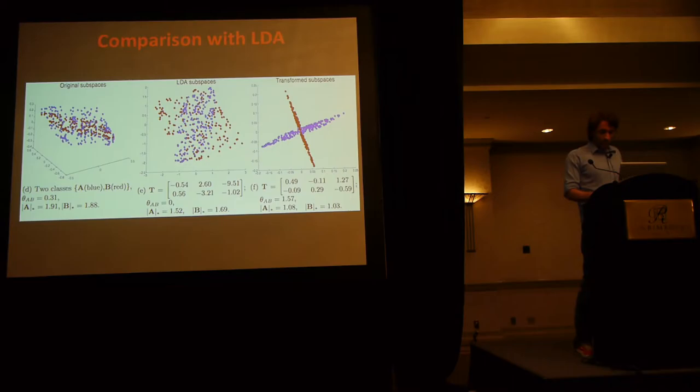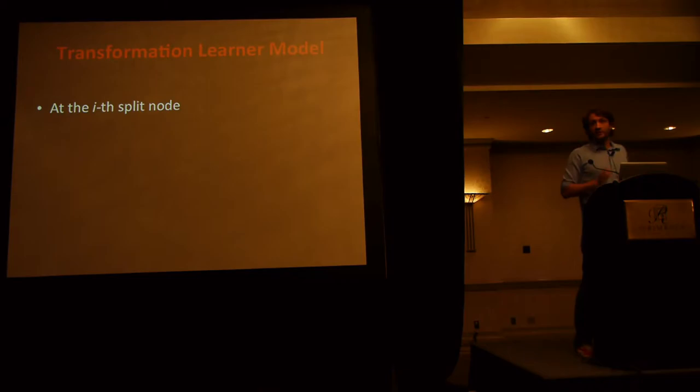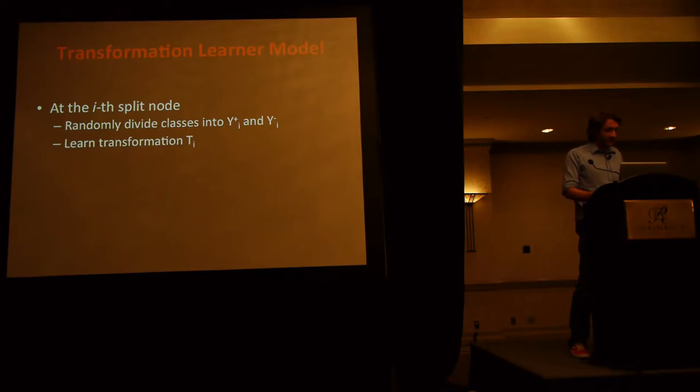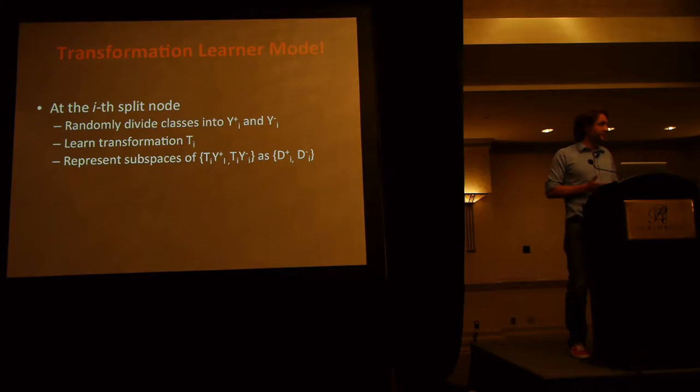Going back now then to the trees, we can see how could this be included as a representation on a particular splitting node. So, given a splitting node, what they do is they randomly divide the classes into two groups, that they call I plus, I minus. This randomization, the objective of this randomization is to avoid in the forest having repeated trees. So, then they learn this transformation following the model that I explained.